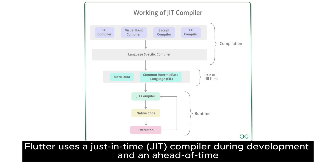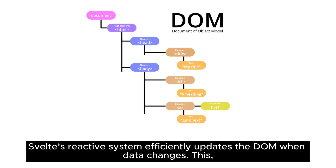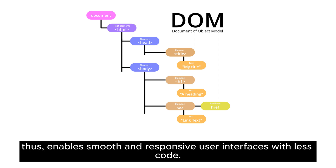Flutter uses a just-in-time (JIT) compiler during development and an ahead-of-time (AOT) compiler for production, ensuring fast and efficient performance. Svelte's reactive system efficiently updates the DOM when data changes, enabling smooth and responsive user interfaces with less code.